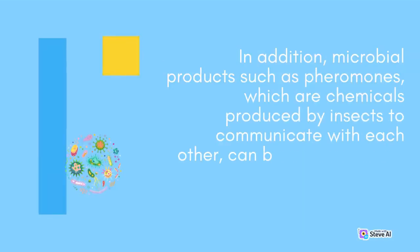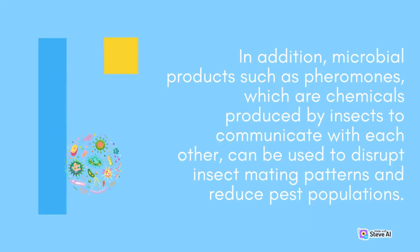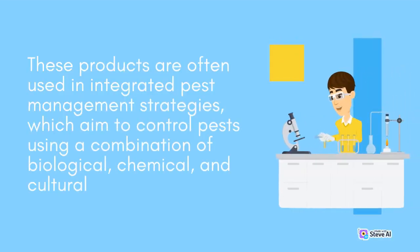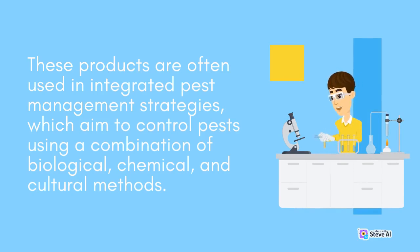In addition, microbial products such as pheromones, which are chemicals produced by insects to communicate with each other, can be used to disrupt insect mating patterns and reduce pest populations. These products are often used in integrated pest management strategies, which aim to control pests using a combination of biological, chemical, and cultural methods.